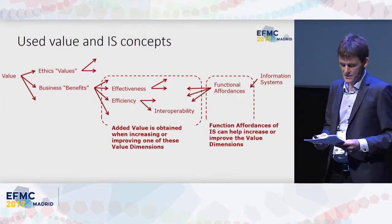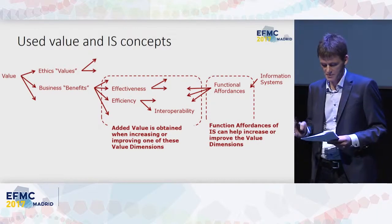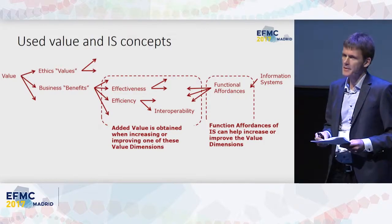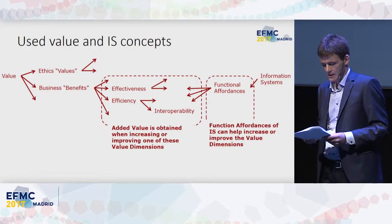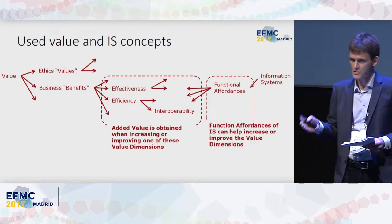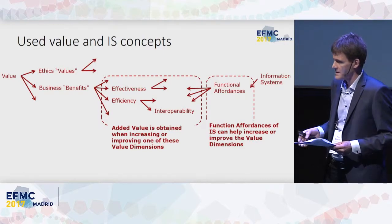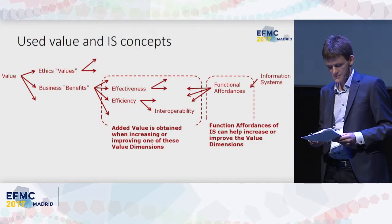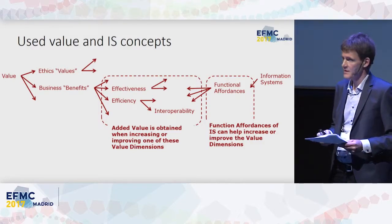There is no common definition of value. In this paper, value is understood as benefits to the business. Examples of benefits from implementing IS can be efficiency, effectiveness, and interoperability, though other dimensions could also be chosen. The IS can offer functional affordances, some of which can improve these value dimensions.